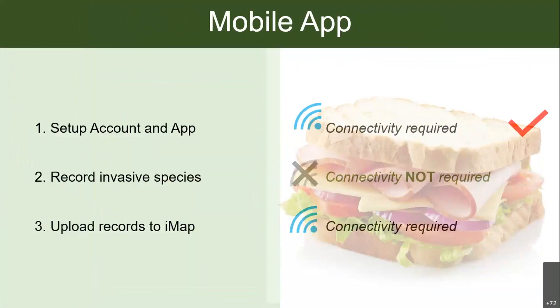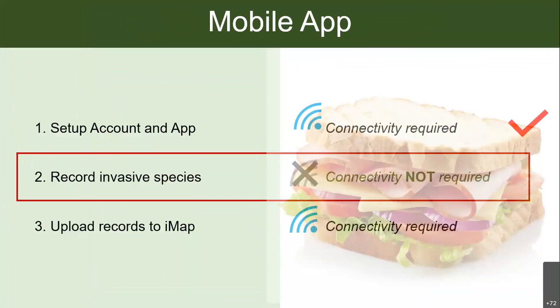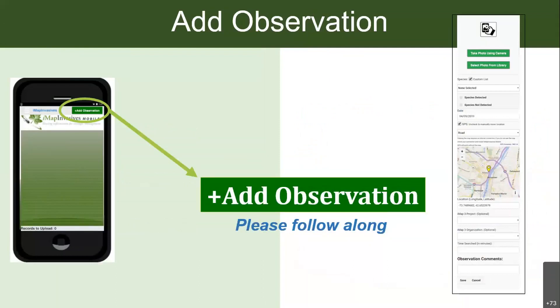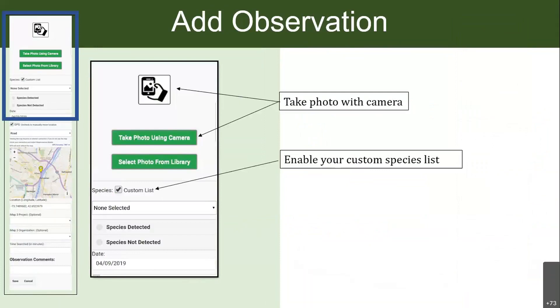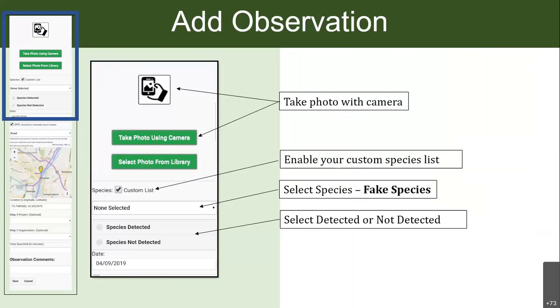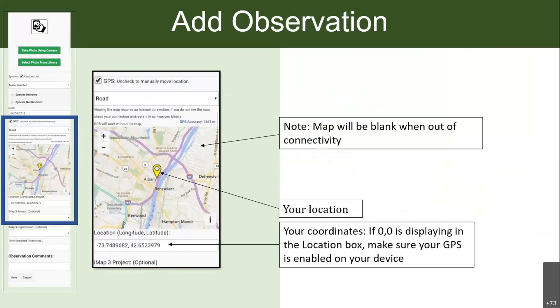At this point everyone's app should be all set up and you are able to go out into the field without connectivity to record species — or you can do this right now wherever you're sitting. Click the 'Add Observation' button on the green screen. I'm going to ask everyone to follow along and enter a fake species. When you click 'Add Observation' it brings you to a screen where you can take a picture, enable or disable your custom species list, and select the species.